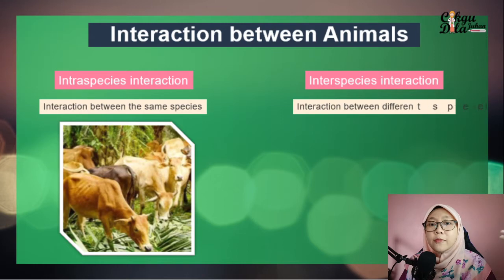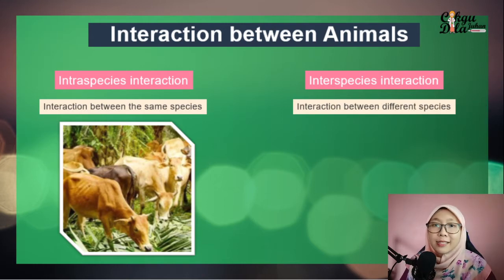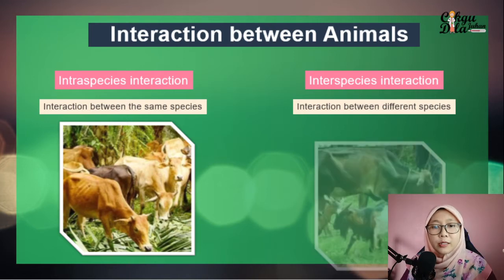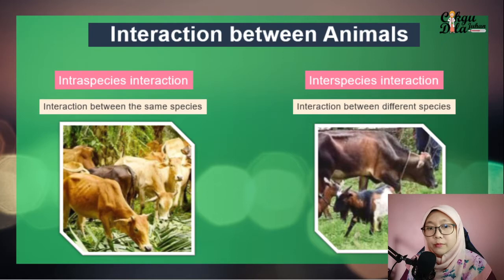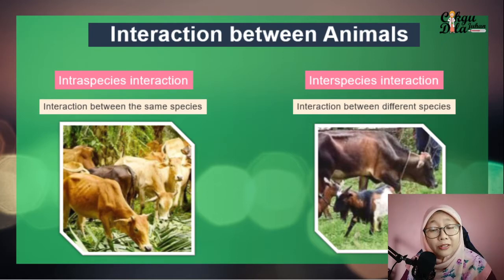We have interspecies interactions, where this interaction is between different species. For example, we have a cow and also a goat. They are different species, but they live together and interact with each other.